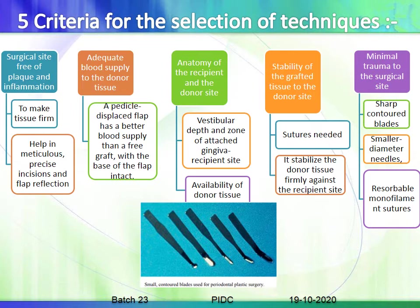Criterion 1: the surgical site must be free of plaque and inflammation to ensure firm tissues and allow meticulous, precise incisions and flap reflection. Criterion 2: there must be adequate blood supply to the donor tissue. A pedicle displaced flap has better blood supply than a free graft, since the pedicle graft retains its connection to the parent tissue, whereas the free gingival graft is completely removed from the palatal area.